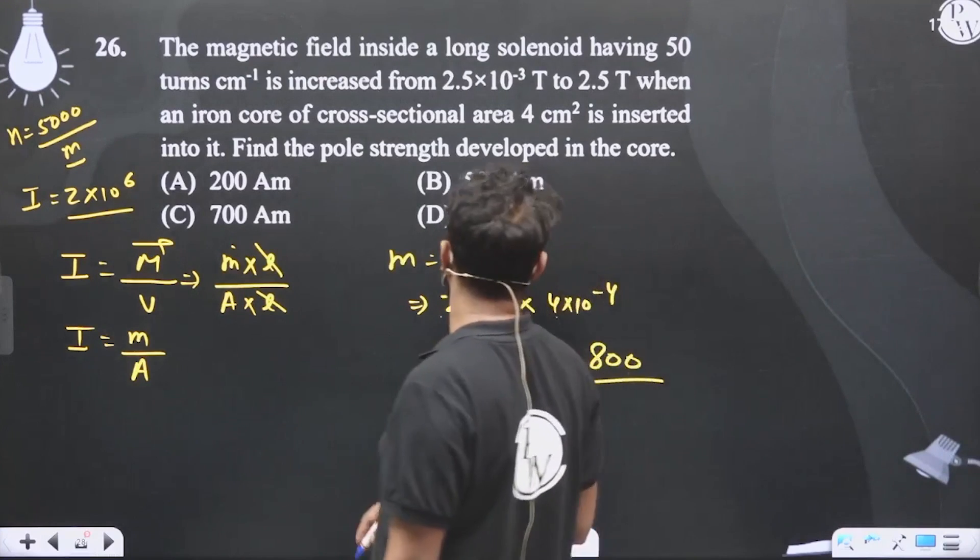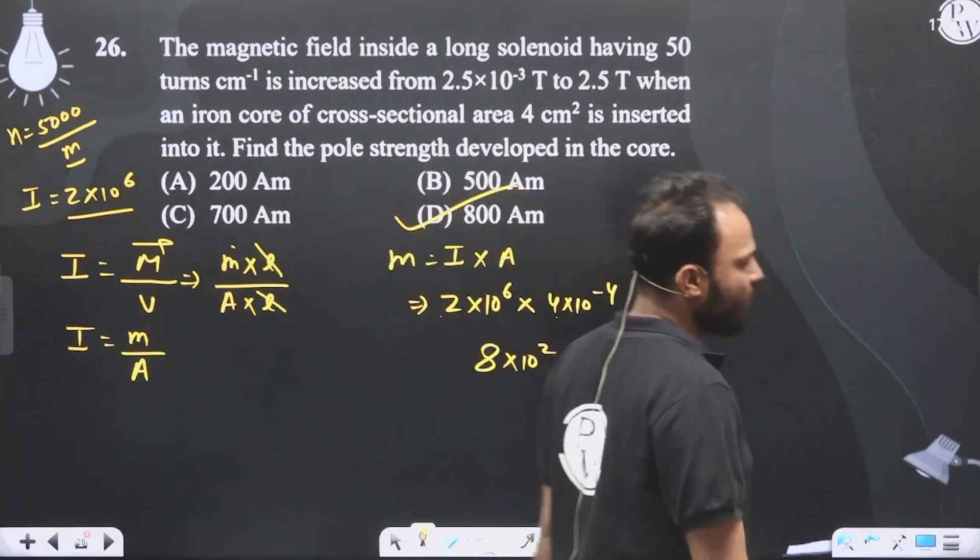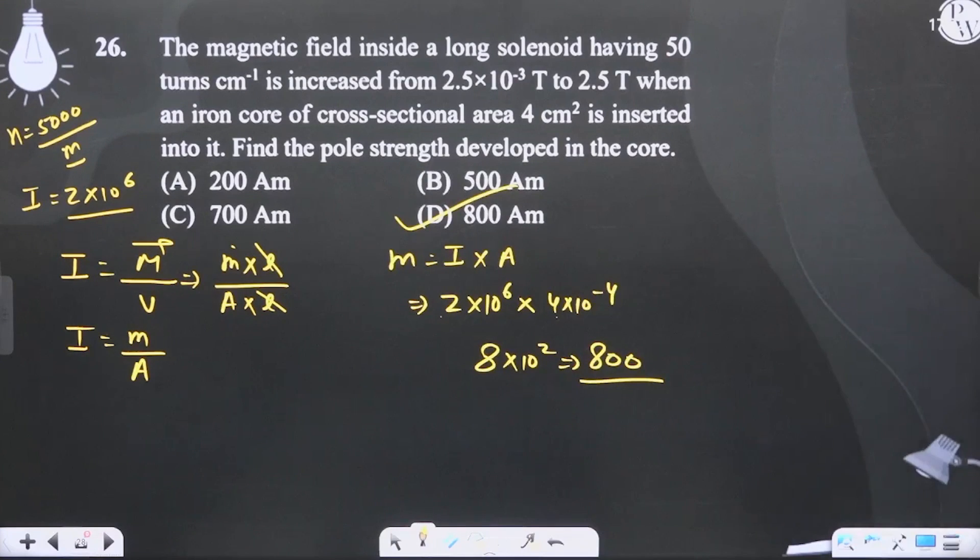This should be our pole strength. Option number D should be our correct answer.